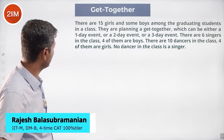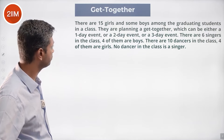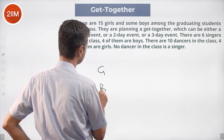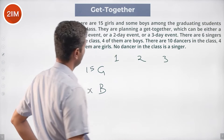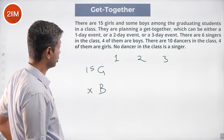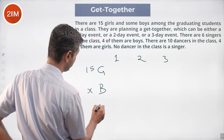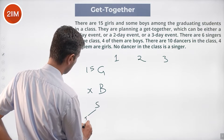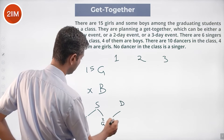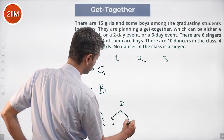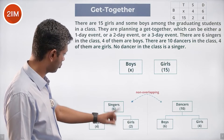There are 15 girls and some boys among the graduating students in a class. They're planning to get together, which can be either a one-day, two-day, or three-day event. The six singers in the class: four of them are boys. The ten dancers in the class: four of them are girls. So singers: four boys and two girls. Dancers: six boys and four girls.